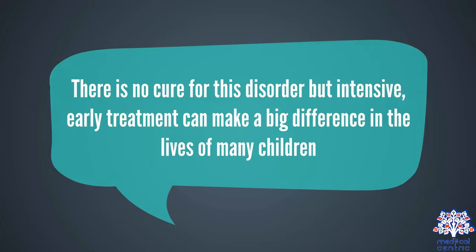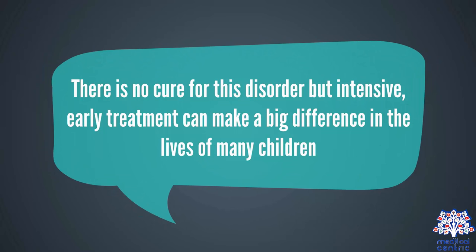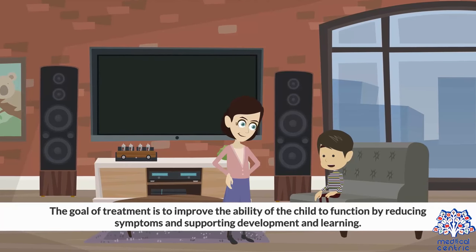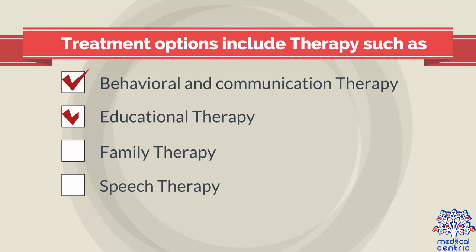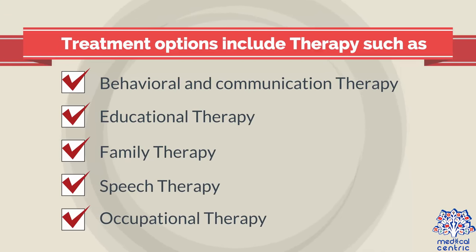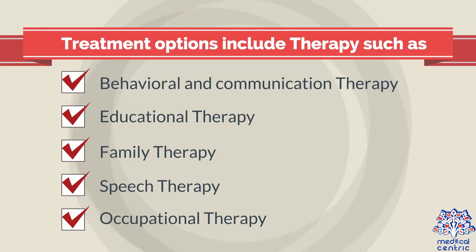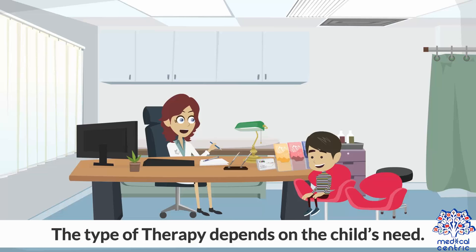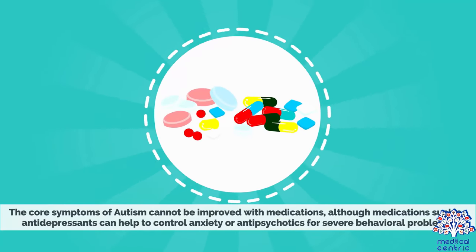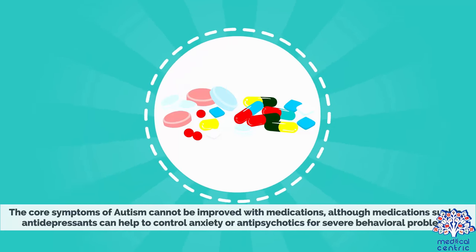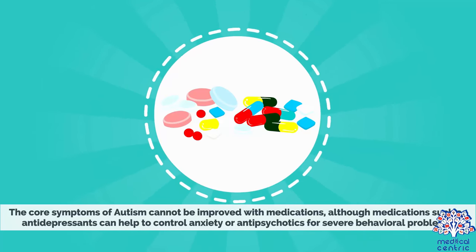There is no cure for this disorder, but intensive early treatment can make a big difference in the lives of many children. The goal of treatment is to improve the ability of the child to function by reducing symptoms and supporting development and learning. Treatment options include behavioral and communication therapy, educational therapy, family therapy, speech therapy, and occupational therapy. The core symptoms of autism cannot be improved with medications, although medications such as antidepressants can help control anxiety, or antipsychotics for severe behavioral problems.